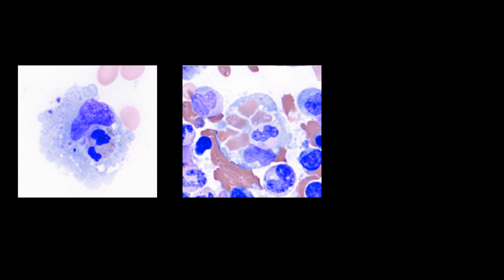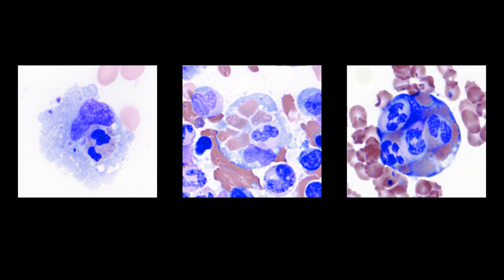Here's a histiocyte with an ingested granulocyte. One with multiple cells, including mature red blood cells. And sometimes you can see some truly bizarre looking structures.